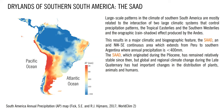Let's start. Large-scale patterns in the climate of Southern South America are mostly related to the interaction of two large climatic systems that control precipitation patterns: the tropical easterlies and the southern westerlies, and the orographic effect — the rain shadow produced by the Andes.